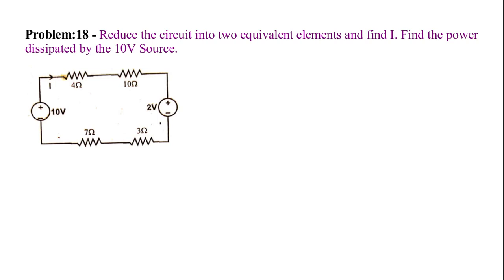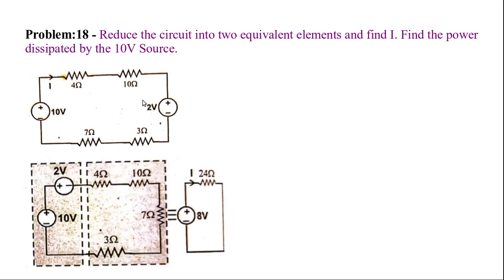Then we find current and power. You can see all of these elements are in series. So the equivalent resistor will be equal to R1 plus R3 plus R4. Add the circuit.